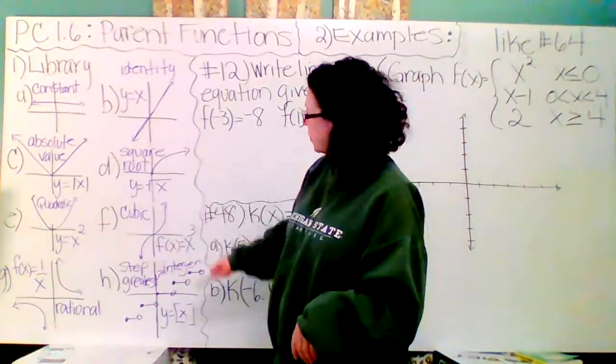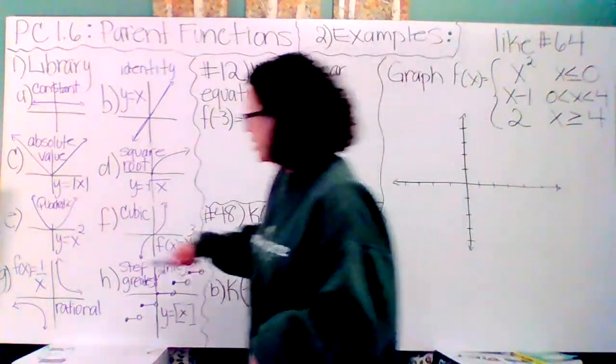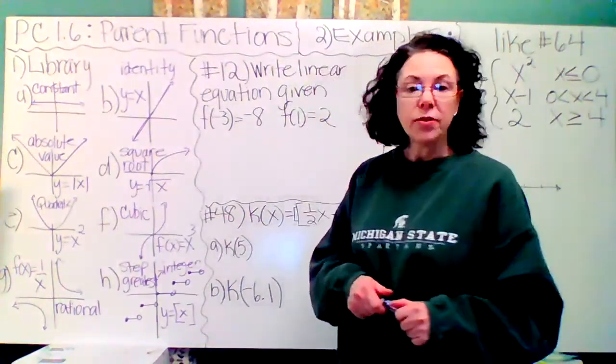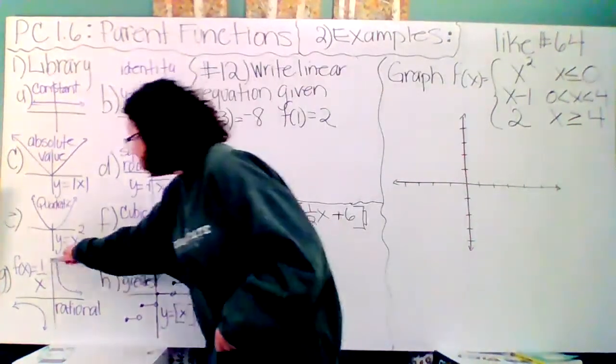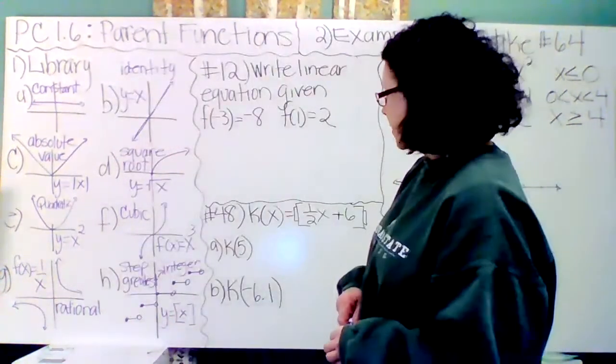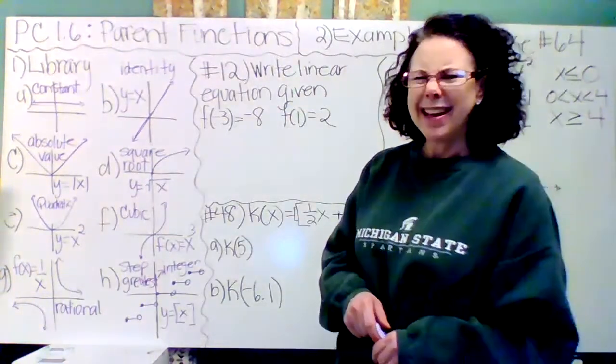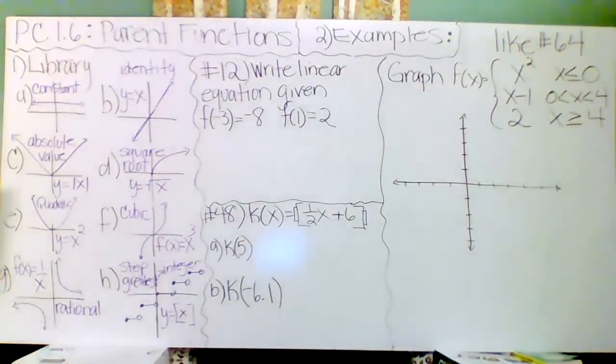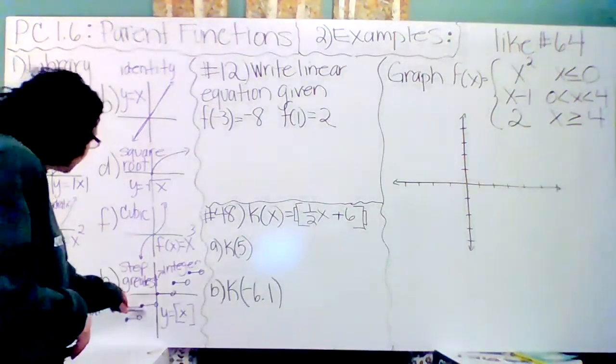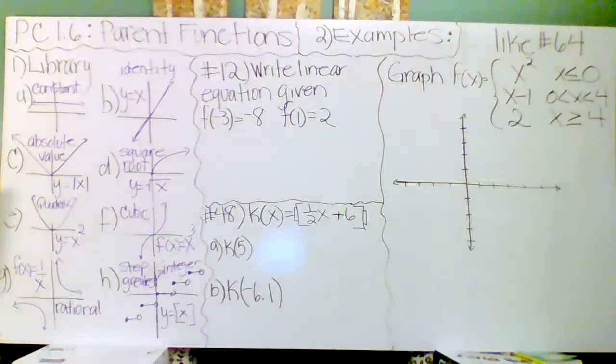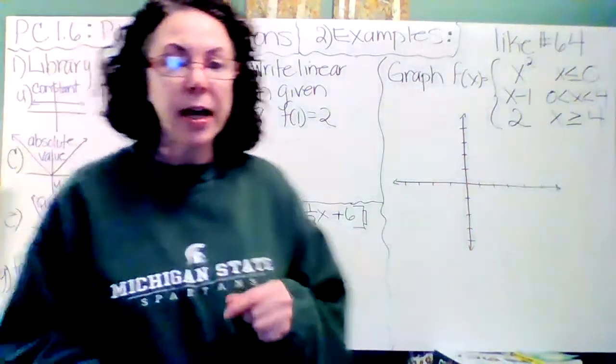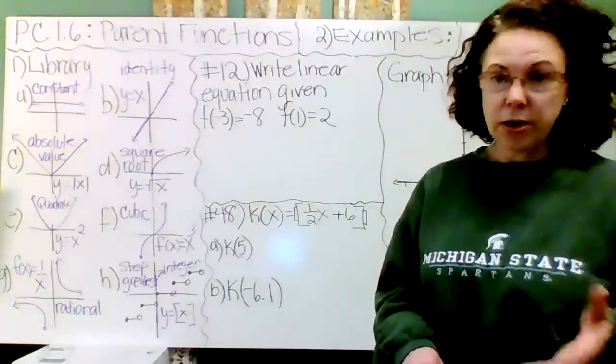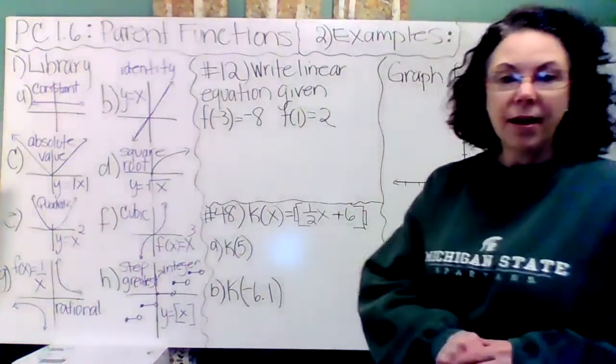The Square Root Function, Y equals the square root of X. Quadratic, Y equals X squared. Cubic, F of X equals X cubed. This is called the Rational Function, 1 over X. Some call that the Reciprocal Function, but that would indicate the reciprocal of some other function. So I like that your book calls it the Rational Function.